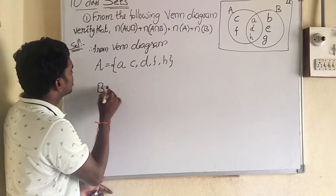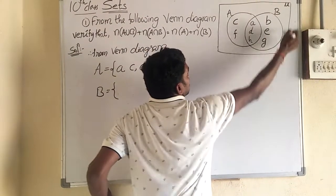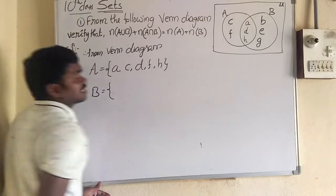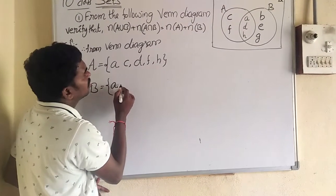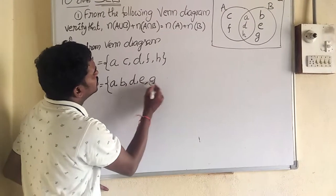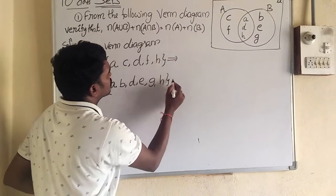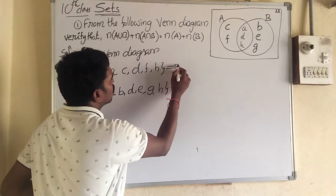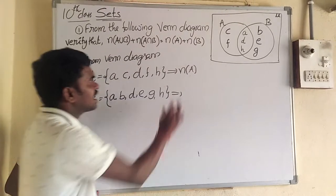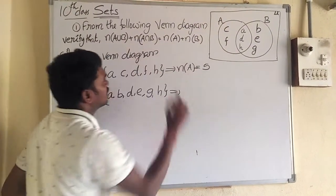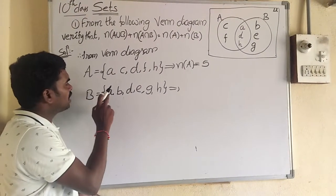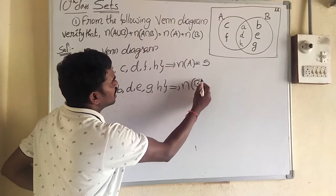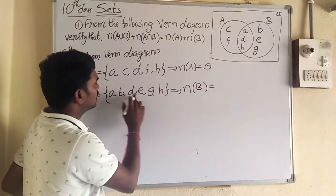Then next, what are the elements of set B? The elements of set B are {A, B, D, E, G, H}. These six are the elements of set B.